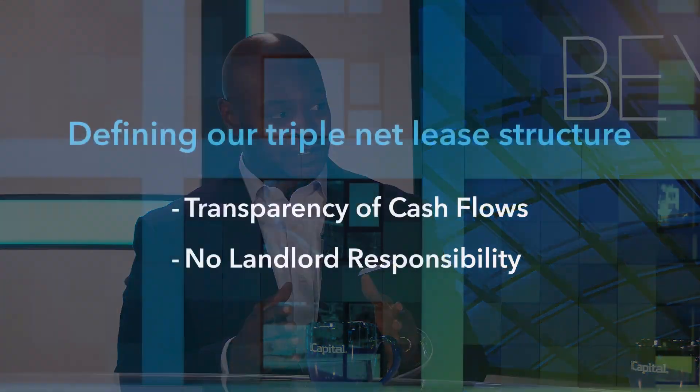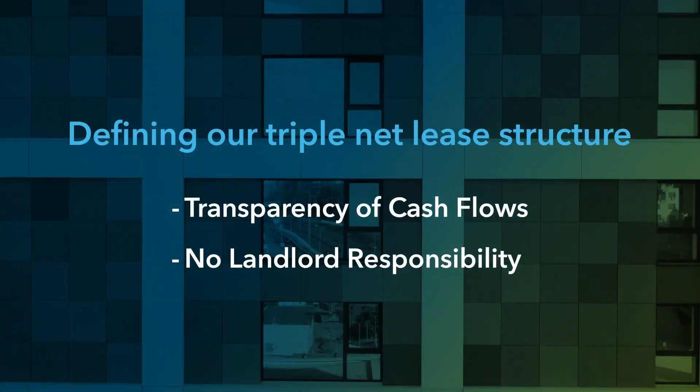So anytime you hear me say net lease or triple net lease, it just describes the contract or the structure of the lease that we put together with a tenant. Basically, all of the operating expenses are the responsibility of the tenant, not the asset owner — taxes, maintenance, insurance, capital expenditures. We love that structure because it provides clarity of capital and we get all of those things net of expenses.